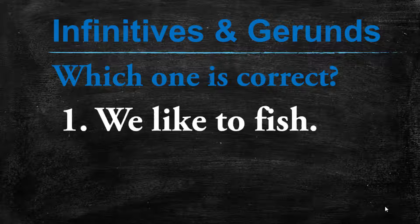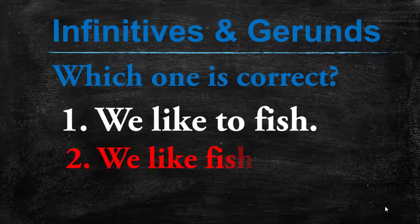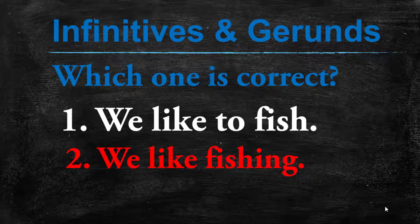I'm going to show you two sentences. Sentence number one: 'We like to fish.' Sentence number two: 'We like fishing.' Both sentences are correct — neither is incorrect — but the meaning of each sentence is different. 'We like to fish' means we intend to fish one day, we want to fish, we will go fishing. But 'we like fishing' talks about a habit, a hobby, something that you do in your free time.